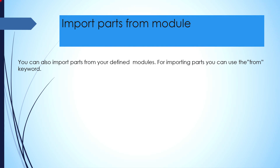If we have a module file where we have different types of variables and functions, and we only need a particular variable, function, or part — for example, one dictionary — the from keyword is used for importing specific parts from the module into your existing file.